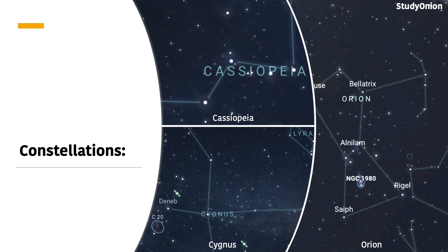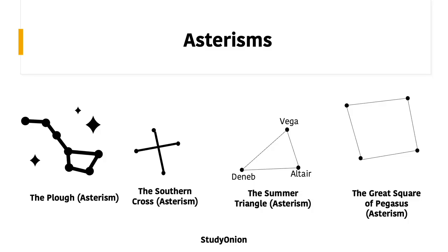There is Cygnus, shown at the bottom left, which is called the Swan constellation. Finally, you might need to know how to draw Orion. You may have heard of Orion from its notable stars and Orion's Nebula. You would need to know how to draw and recognise the stars within the Orion constellation.